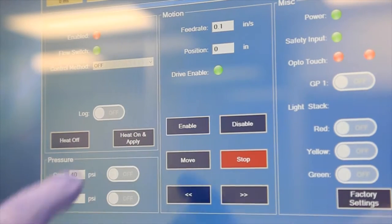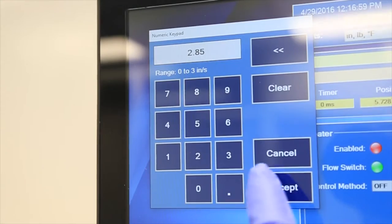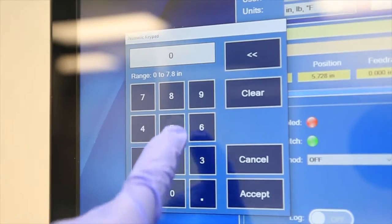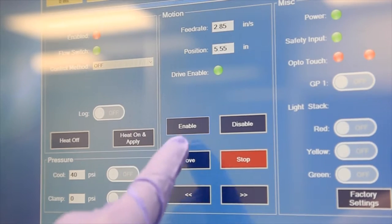Enable the drive and input your desired rate of movement, 0 to 3.00 inches per second. Input desired carriage position from 0 to 7.6 inches along the runway.